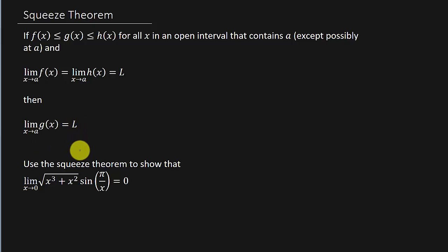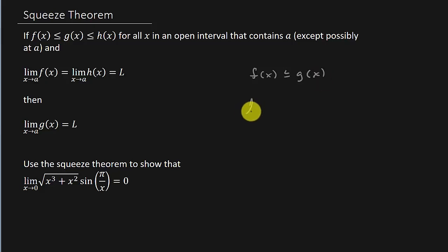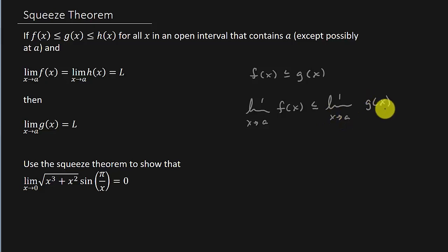One other theorem I want to mention: the theorem says that if f(x) ≤ g(x) when x is near a, except possibly at a, and the limits of f and g both exist as x approaches a, then the limit as x goes to a of f(x) is less than or equal to the limit as x goes to a of g(x). This is the squeeze theorem — sometimes you may hear it called the sandwich theorem or pinching theorem. I'll call it the squeeze theorem.